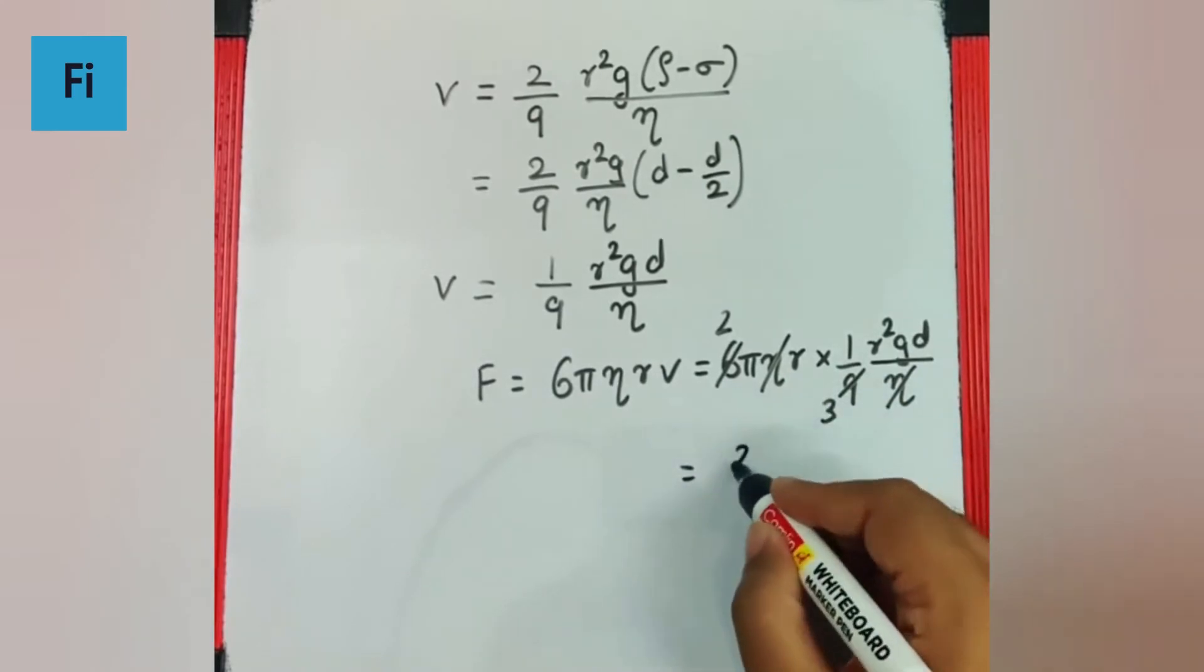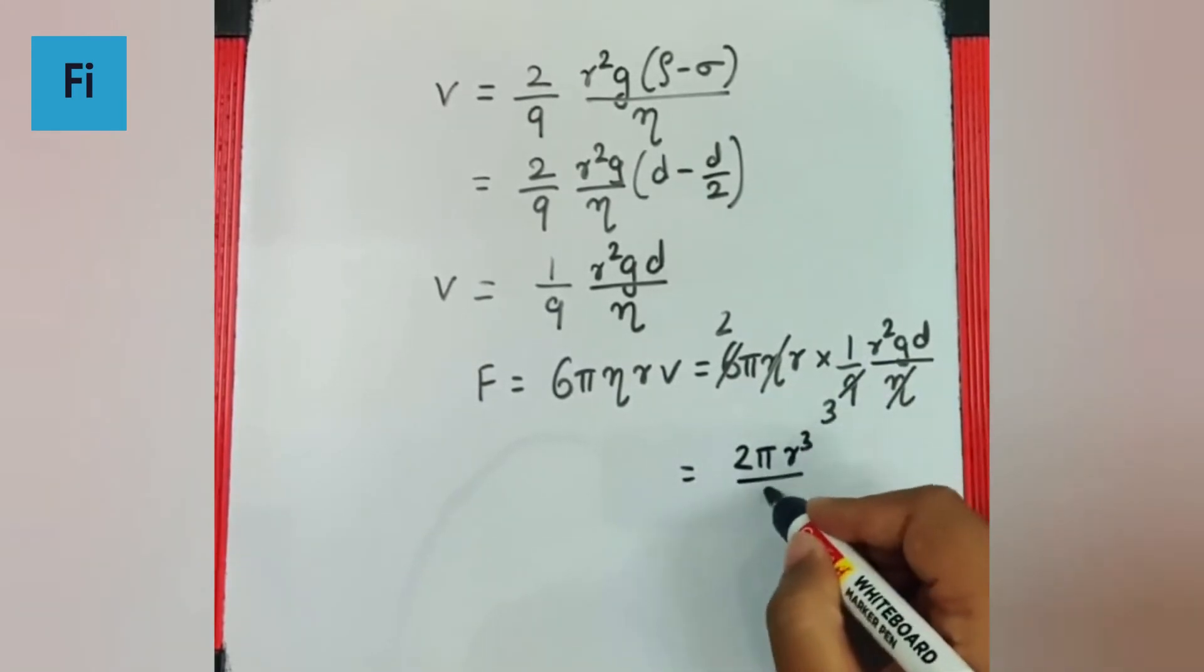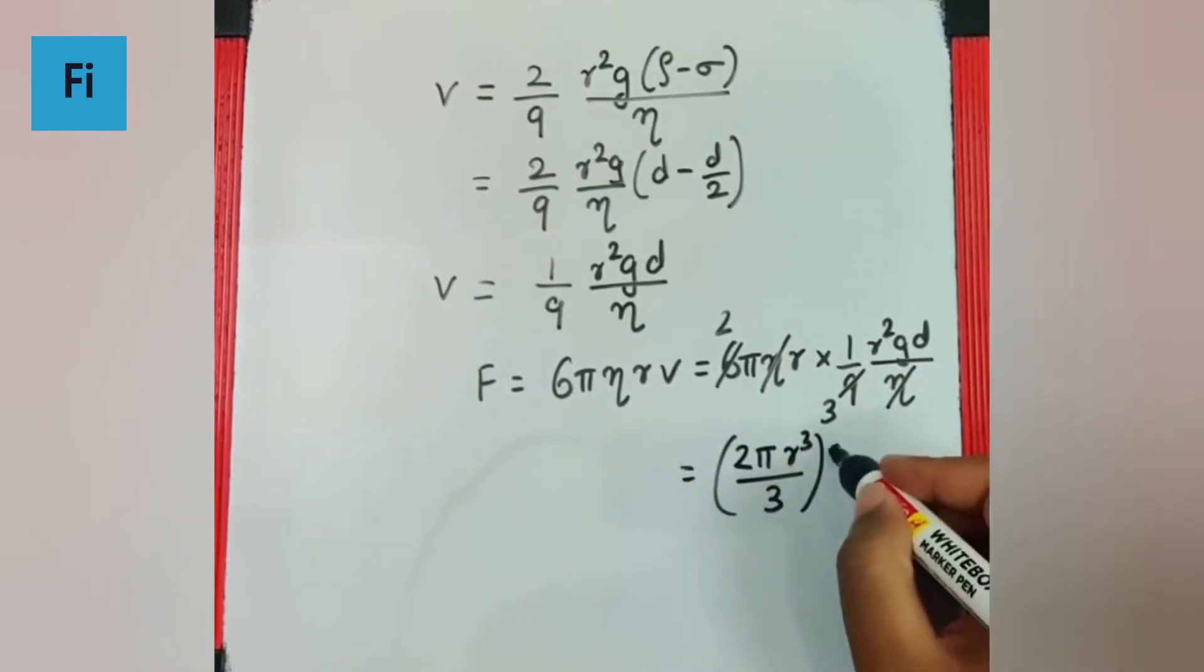Now if you understand this, this is going to be 2 pi R cube by 3 into G d.